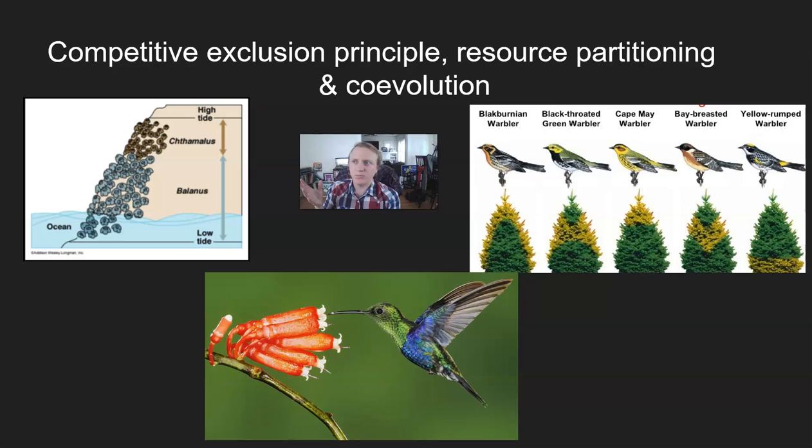And now we're going to be talking about one of the consequences of those, which is the competitive exclusion principle. We're also going to talk about resource partitioning and then probably in a later lecture, co-evolution, which are two strategies that organisms can use to deal with this competition that they're getting from other species.